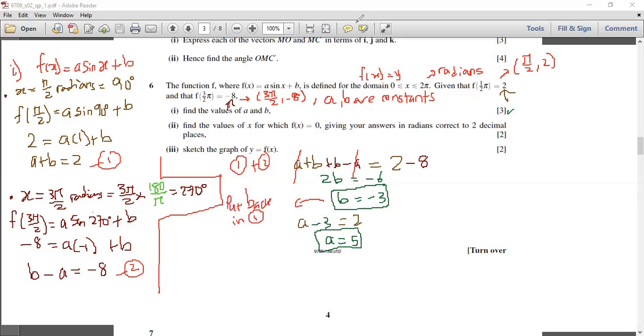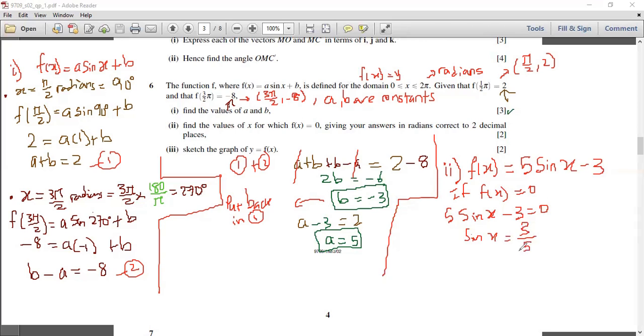Now the second part. They say find the values of x for which f(x) = 0, giving your answers in radians correct to two decimal places. So f(x) now equals the values of a and b is 5, a is 5 sin(x), and the b is -3. So 5 sin(x) - 3. They want f(x) to be 0. So if f(x) is 0, we'll put the whole equation equal to 0. So 5 sin(x) - 3 = 0, and therefore sin(x) = 3/5.